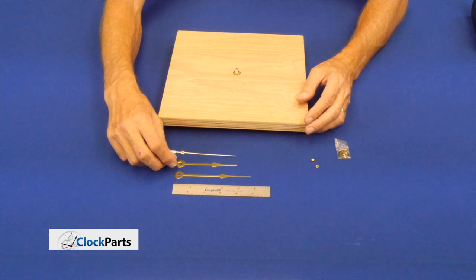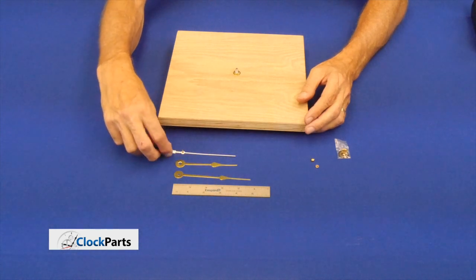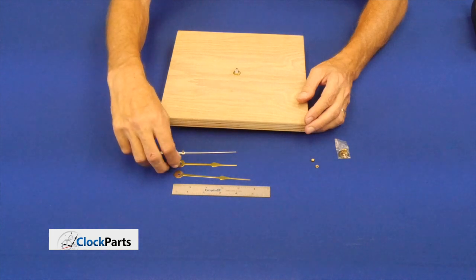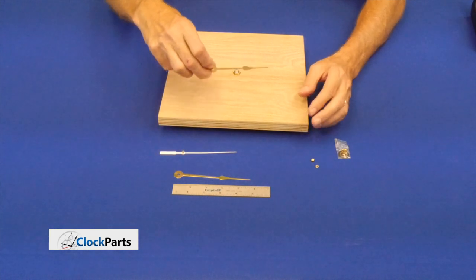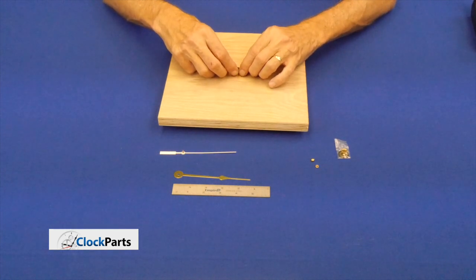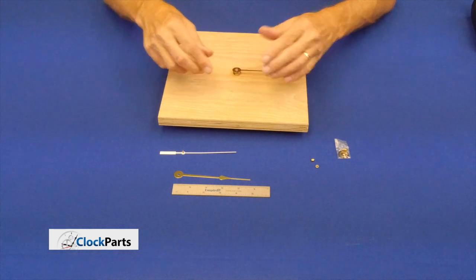Now, here are our hands. We have the minute hand, the longer one, and the hour hand. And like I said, we purchased a second hand in this case. So, the first hand that goes on is the hour hand, the shorter one. It's a press-on. Just lay it on there and press down, and then it's secure.